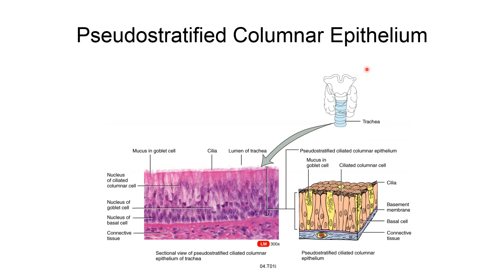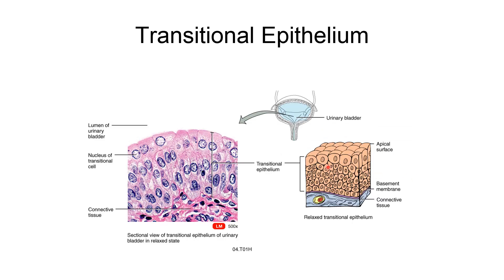Pseudo-stratified columnar epithelium is made up of columnar cells of different lengths with nuclei arranged at different positions — some superior and some near the basement membrane. These cells also have cilia and are mostly present in the trachea, with goblet cells interspersed among them for mucus release. Transitional epithelium cells appear cuboidal in shape when unstretched, but layers slip over each other and cells become flat under pressure, increasing the volume capacity.